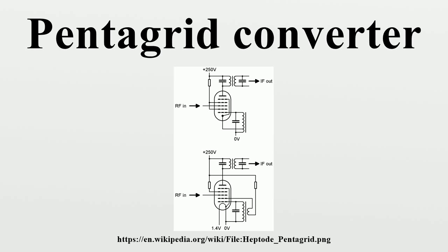In the UK, the five grids operated thus. Grid 1 acted as the oscillator grid in conjunction with grid 2, which acted as its anode. Grid 4 accepted the incoming signal, with the remaining two grids, 3 and 5, connected together, which acted as screen grids to screen the anode, grid 4, and grid 2 from each other. Because grid 2 was a leaky anode in that it allowed part of the modulated electron stream through, the oscillator was coupled into the mixing section of the valve. In fact, in some designs, grid 2 consisted of just the support rods, the actual grid wire itself being omitted.